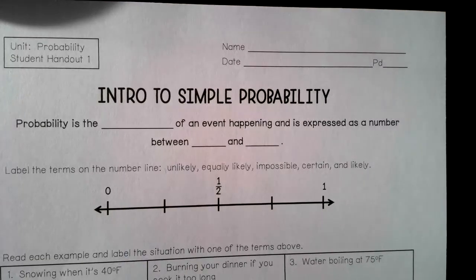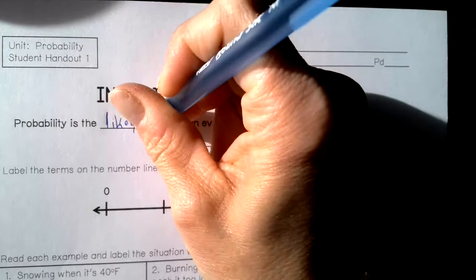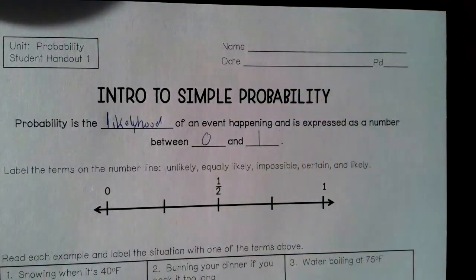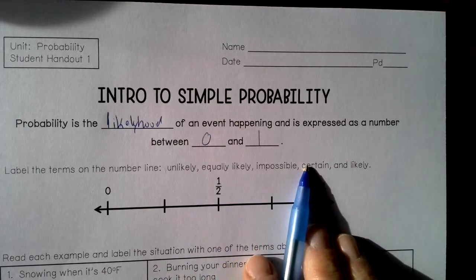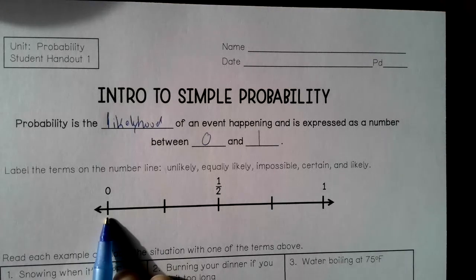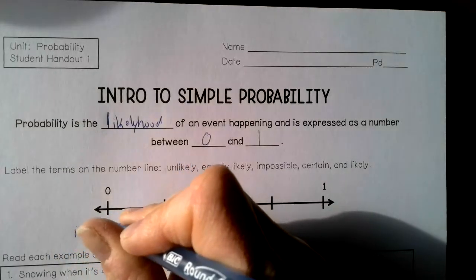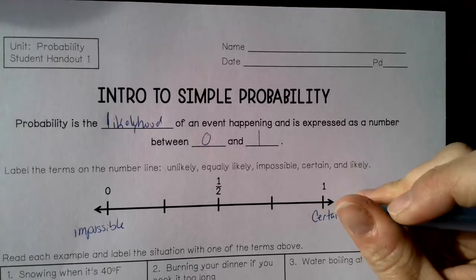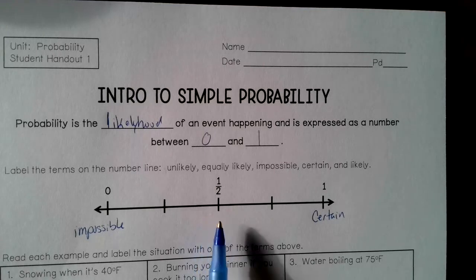Let's fill this out together and try simple probability. Probability is the likelihood of an event happening, and it's expressed as a number between 0 and 1. We're going to label the terms on the number line: unlikely, equally likely, impossible, certain, and likely. If it has a probability of 0, it is impossible. If it has a probability of 1, it is certain. If it has a probability of one-half, it's equally likely that it will or will not happen.